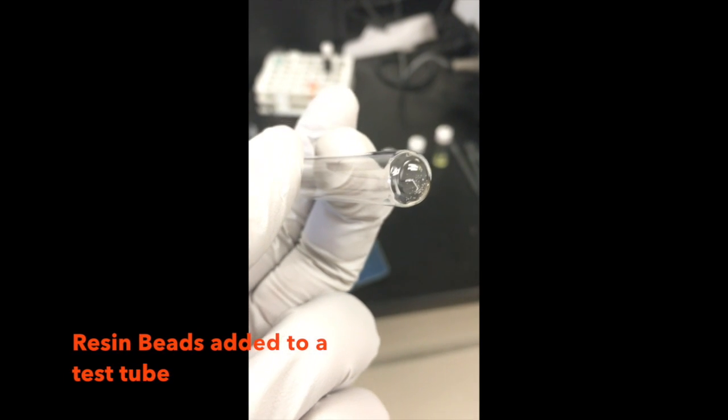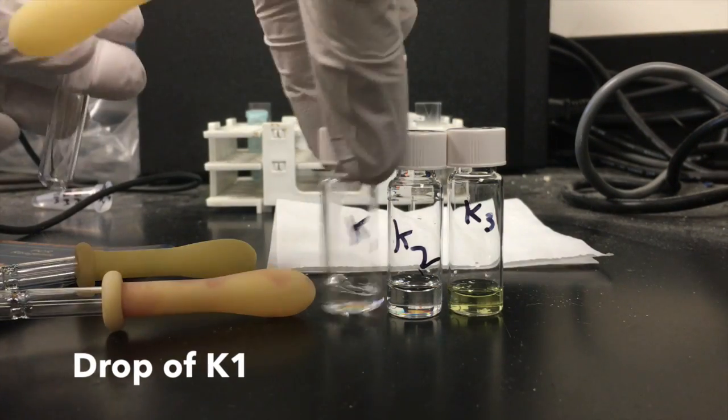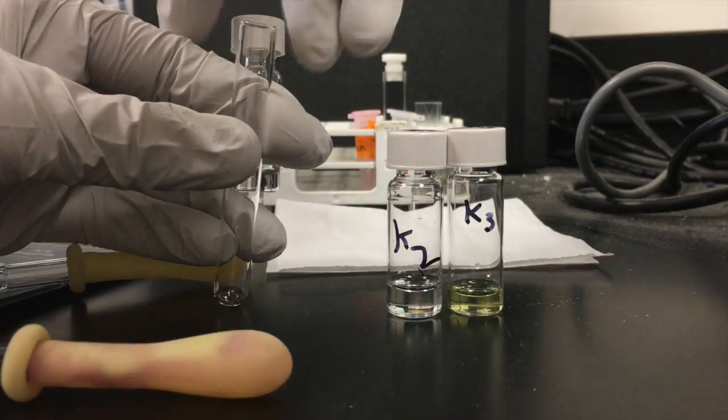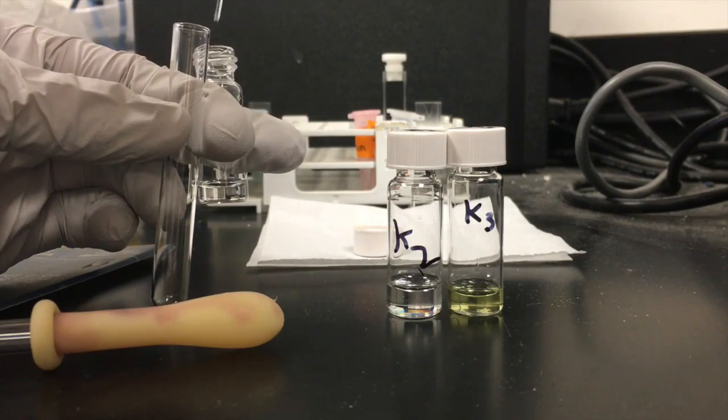Here, as you can see, we have added some beads to a small test tube. After adding the beads to the test tube, we will add one drop of each Kaiser Test Solution and we will start with adding one drop of Kaiser Test Solution 1.